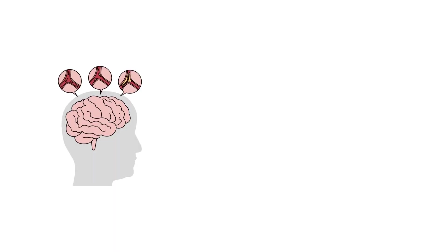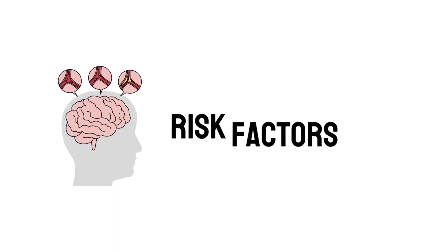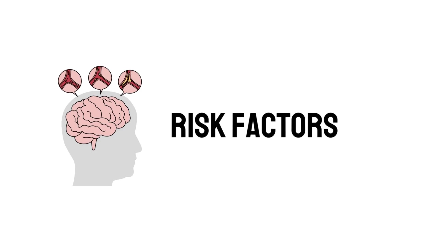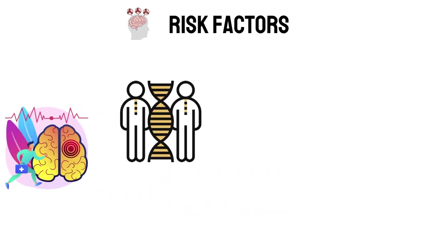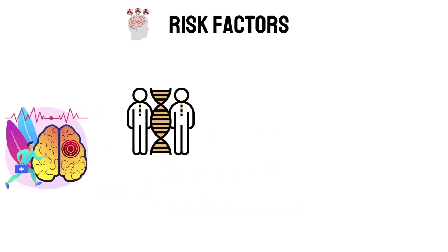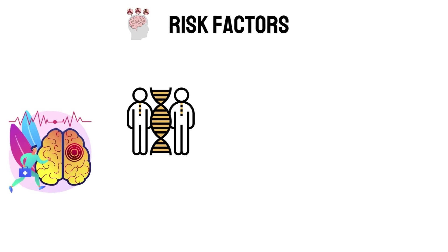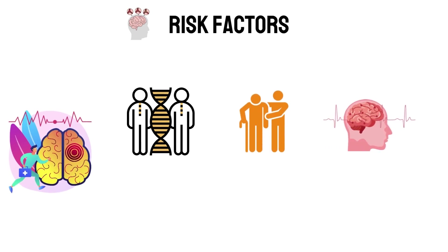Certain things can make you more likely to have a stroke — these are called risk factors. Some risk factors can't be changed. You are at higher risk if anyone in your family has had a stroke, you are more than 55 years old, you've had a stroke before, or you have certain genetic conditions.